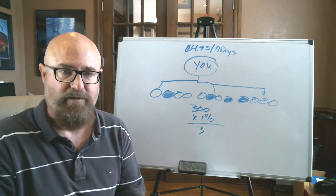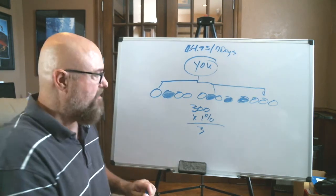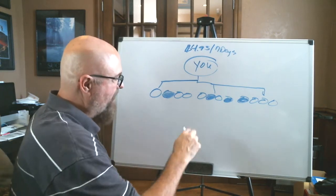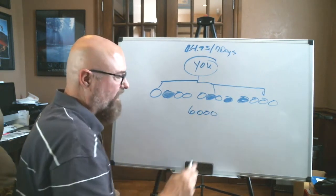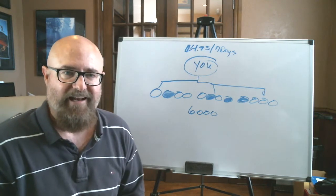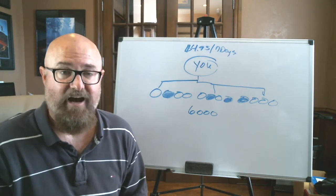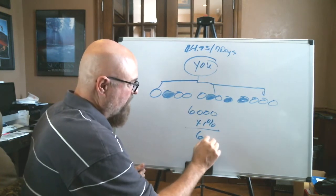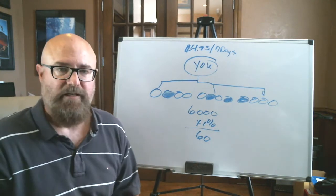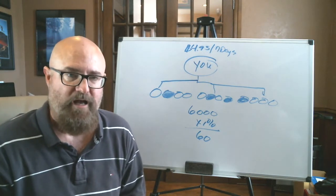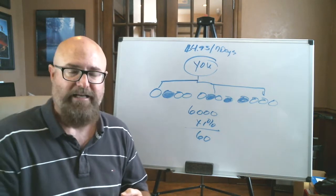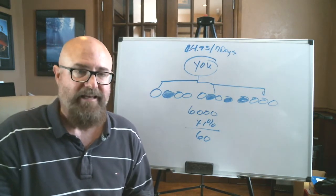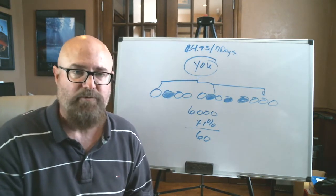It doesn't seem like a lot, but how many times have you logged in and actually seen your check go down in your network marketing business and not go up? So here's what we do. We've got a group right now that has about 6,000 leads a month that they're calling. 6,000 times 1%, so we're growing by the rate more than 60, but at least 60 new people a month. And that's growing. It used to be 20, used to be 30, used to be 40. Now it's 60.